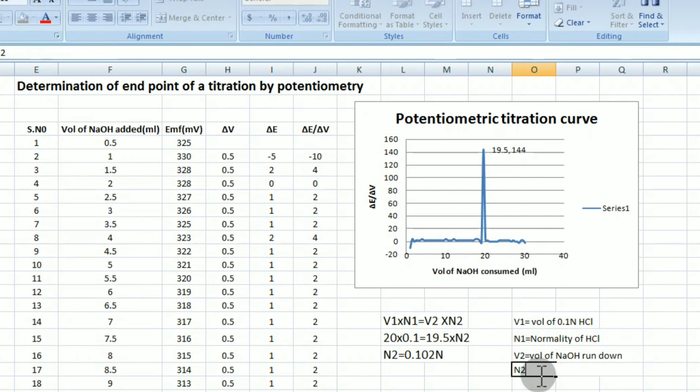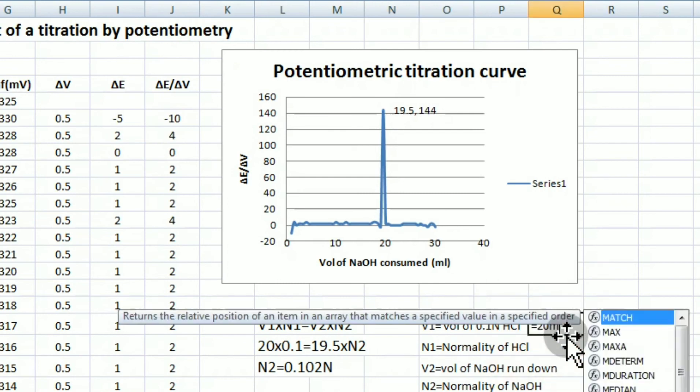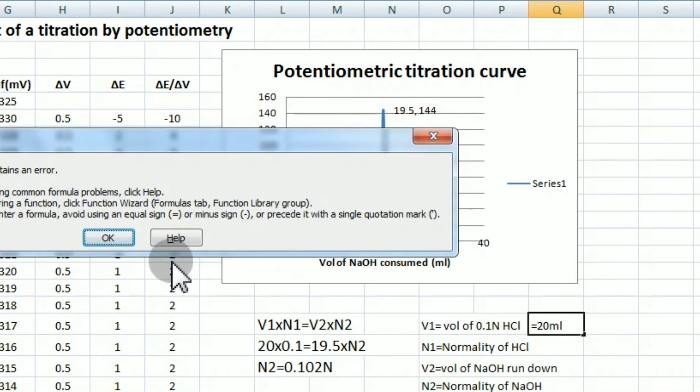So by simply using the formula V1N1 is equal to V2N2, we can calculate the exact normality of sodium hydroxide solution, where V1 is the volume of 0.1N HCl that is 20 ml taken into the beaker, N1 is the normality of HCl that is 0.1N and V2 is the volume of sodium hydroxide that is run down to get the endpoint which is obtained from the potentiometric titration curve that is shown above. And then N2 is the normality of NaOH.